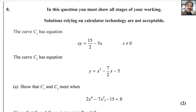Hello everyone, welcome back to my math channel Mathler. In this video, I will answer question number 8 from the P1R 700XL A-level exam for Pure Math 1. This exam was taken in October 2023 and the paper reference code is WMA11-01.